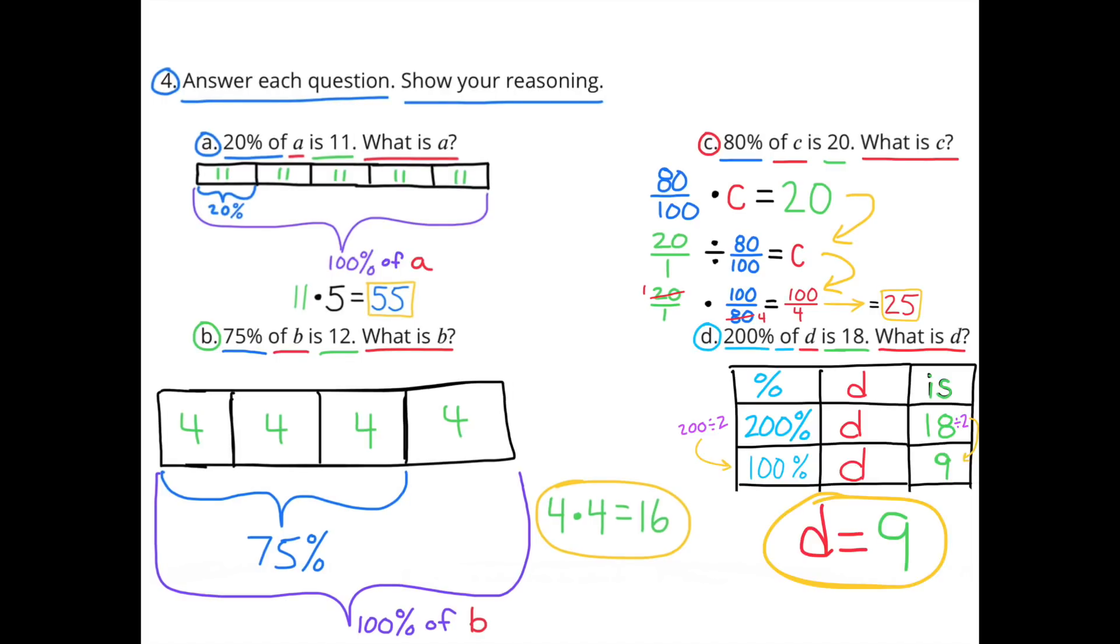Part D: 200% of D is 18. What is D? This time, I used a chart. 200% of D equals 18. 200% divided by 2 gives me 100%. I also need to divide 18 by 2, and that gives me 9. So I know that 100% of D equals 9, or D equals 9.